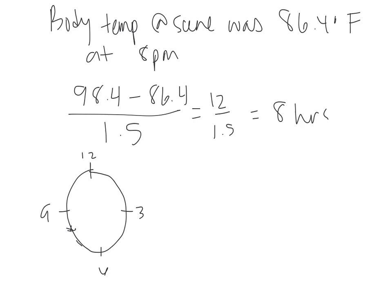So if you think of your clock — noon, three, six, nine — if we're at eight o'clock and we go back eight hours, we end up with the person dying at 12 PM noon.